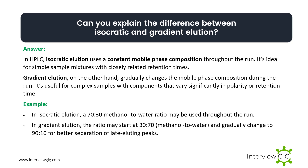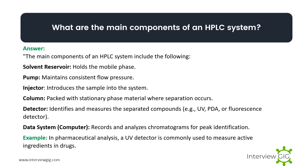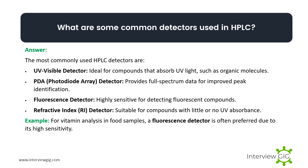What are the main components of an HPLC system? The main components include: solvent reservoir, which holds the mobile phase; pump, which maintains consistent flow pressure; injector, which introduces the sample; column, packed with stationary phase material where separation occurs; detector, which identifies and measures separated compounds; and data system, which records and analyzes chromatograms. Example: in pharmaceutical analysis, a UV detector is commonly used to measure active ingredients in drugs.